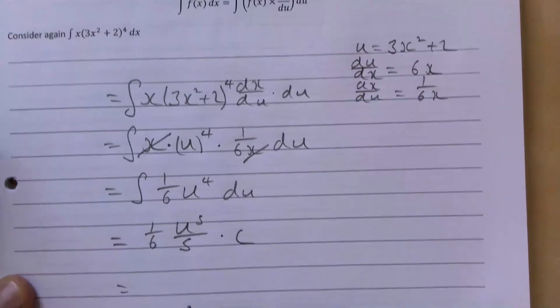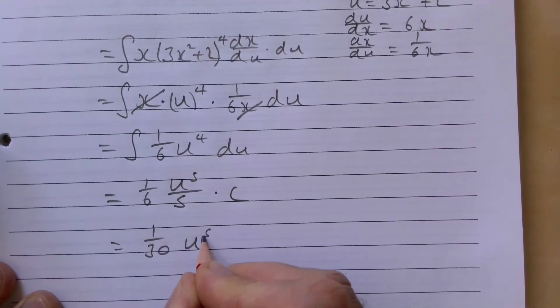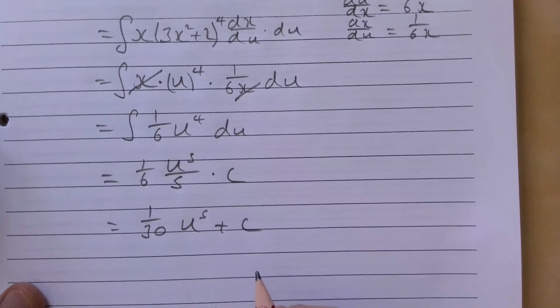And tidying that up, we will have 1/30 u⁵ plus c. We're almost there, we just need to change it back.